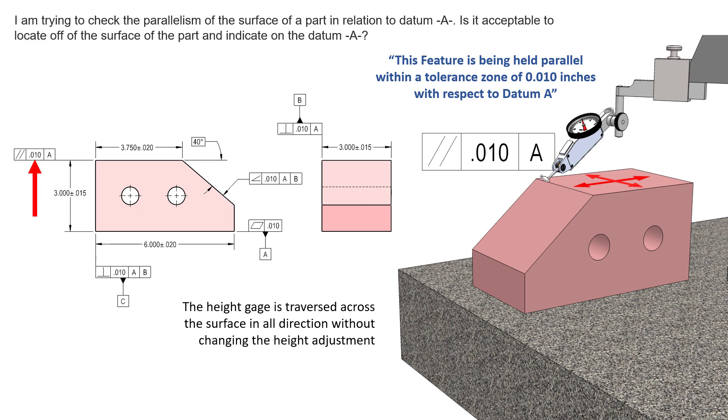And so if this area over here was a little bit low and this area over here is a little bit high, the difference between these two with respect to our inspection plane is going to be our parallelism error as well as any form error between them.